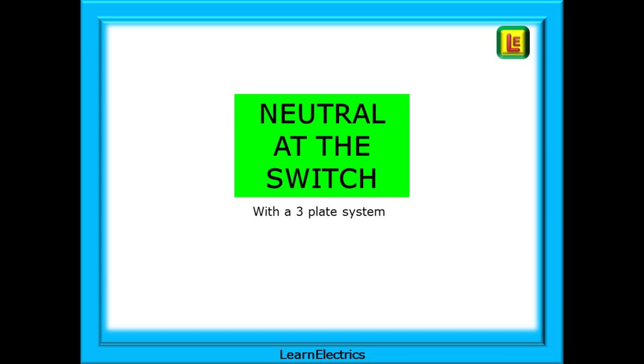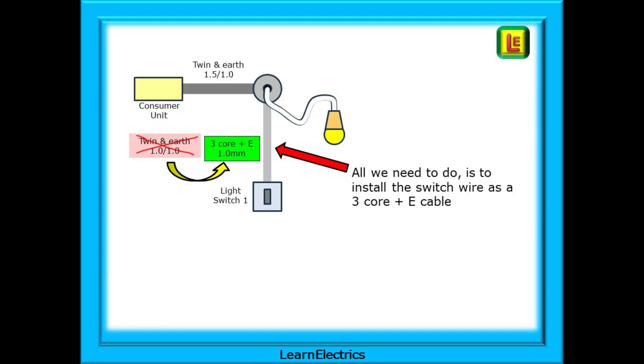Back to the question: if I rewire the house to the basic three plate system using the blue in the switch cable as a switched line, what happens when the customer phones in two years and asks me to put his smart switches in? If the blue is already used for switching, what can I do? All that you need to do is this: at the time of the rewire, install three core plus earth as the switch cable and then wire as you would for any of the switching types and leave the neutral at the switch ready for use.